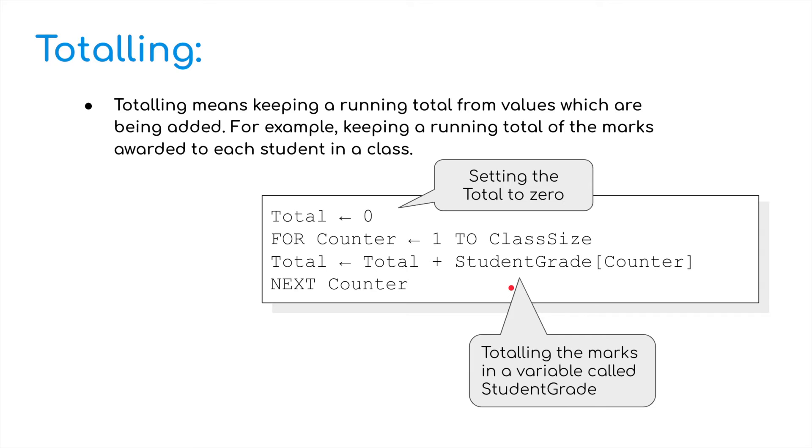So let's start with totalling. Nice and easy totalling. Totalling means keeping a running total from values which are being added. For example, keeping a running total of the marks awarded to each student in a class. As we start the program, we assign 0 as the value of total. So number 0 to the value of total.